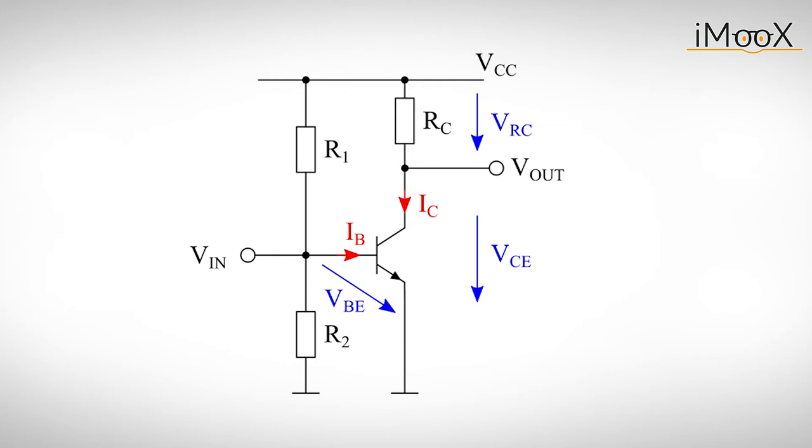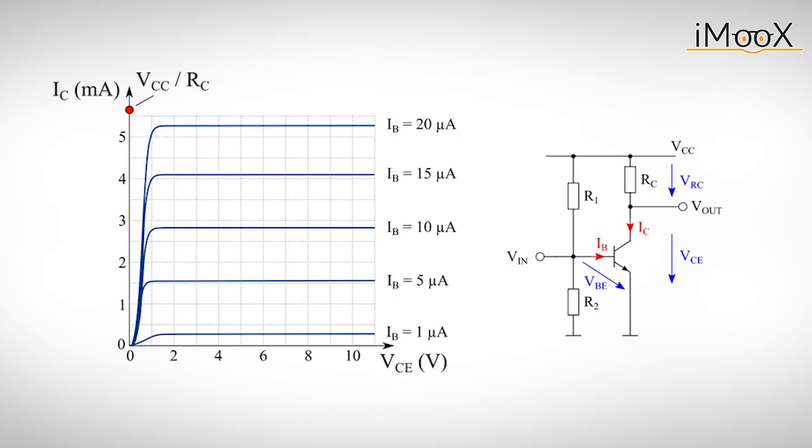Since the total voltage VCC is fixed, the output voltage VCE will also vary with different quiescent currents. When we adjust IC to be high, VRC will also be high and therefore the output voltage VCE will be low. The theoretical maximum of IC is represented in our diagram by this point.